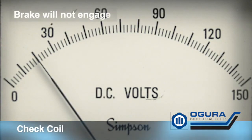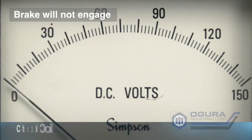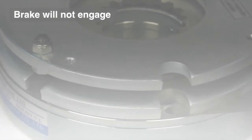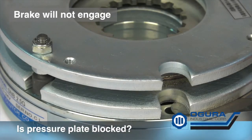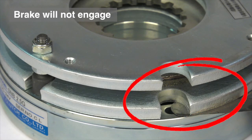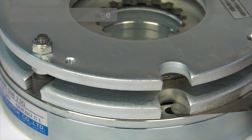Brake will not engage. Check the voltage to make sure voltage is being turned off to the brake. Make sure pressure plate is not blocked. Check to make sure there is nothing stuck in the brake blocking the brake or make sure there are no release screws tightened down.